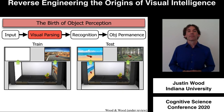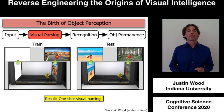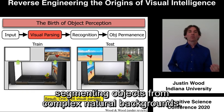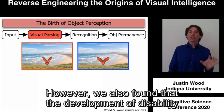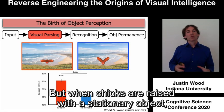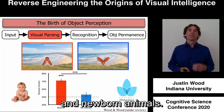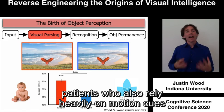We found that chicks can recognize their imprinted object across novel backgrounds, even if their training data consisted of a single object on a single background. So newborn chicks can perform one-shot visual parsing, segmenting objects from complex natural backgrounds. However, we also found that the development of this ability requires motion cues. When chicks were raised with a moving object, they developed object parsing. But when chicks were raised with a stationary object, the chicks failed to develop object parsing. So motion cues drive the development of object parsing in newborn animals, akin to young human infants and newly sighted blind patients, who also rely heavily on motion cues to develop object perception.